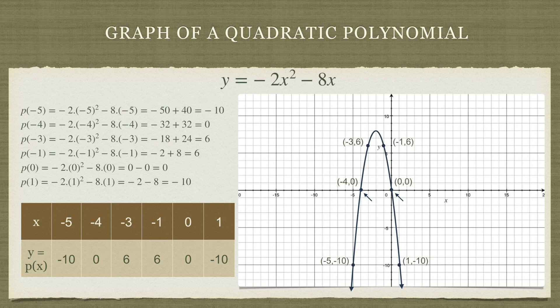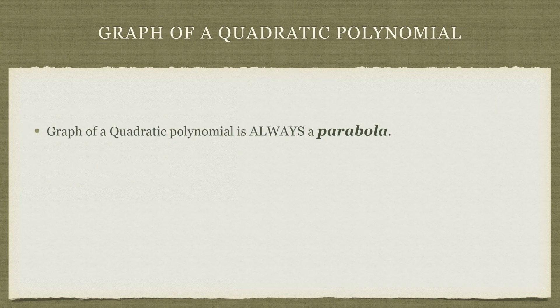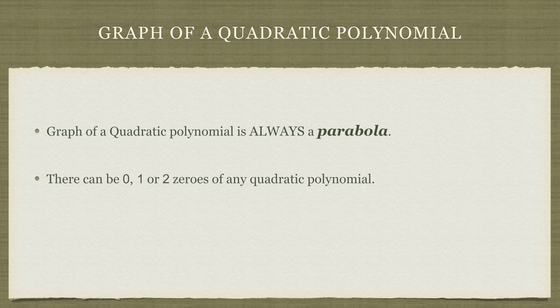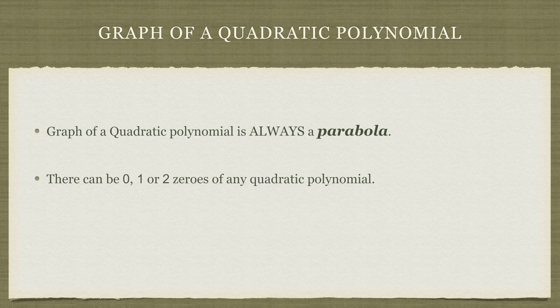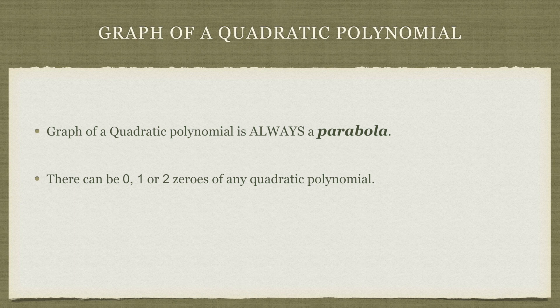To recap these points: the graph of a quadratic polynomial is always a parabola. There can be 0, 1 or 2 zeros of any quadratic polynomial. In this case, we saw one with two zeros. Remember, the number of zeros cannot exceed the degree of the polynomial. Quadratic polynomials are degree 2, so we can have a maximum of two zeros.